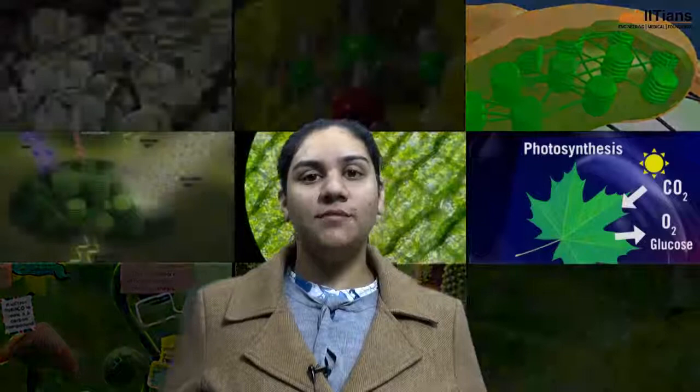All living organisms need food for their survival. Like animals, they eat plants and other animals for their survival. Plants make their own food by the process of photosynthesis, by trapping the sunlight and using raw materials like carbon dioxide and water.